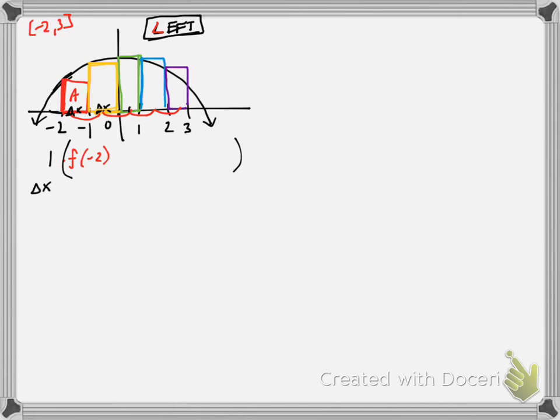This rectangle here in yellow, its height was dictated not by zero, but rather the left endpoint, which is at negative one. So plus f of negative one. So plus f of zero, not f of one, but f of zero. The next one's height came from f of one. And finally, the last interval, its endpoint comes from the two, not the three. That's what it means by left endpoint.